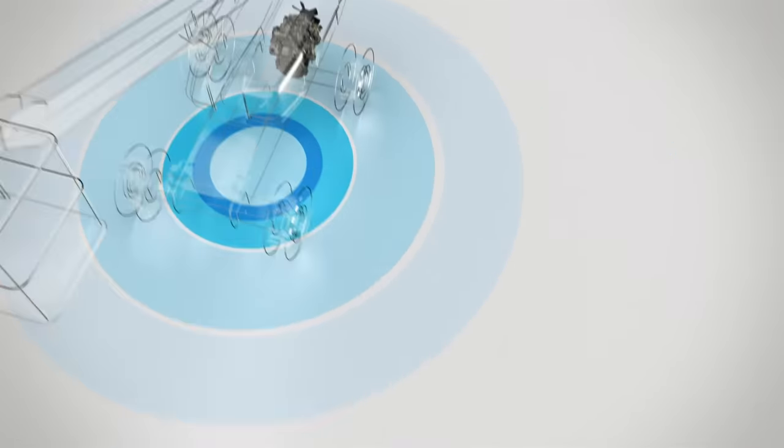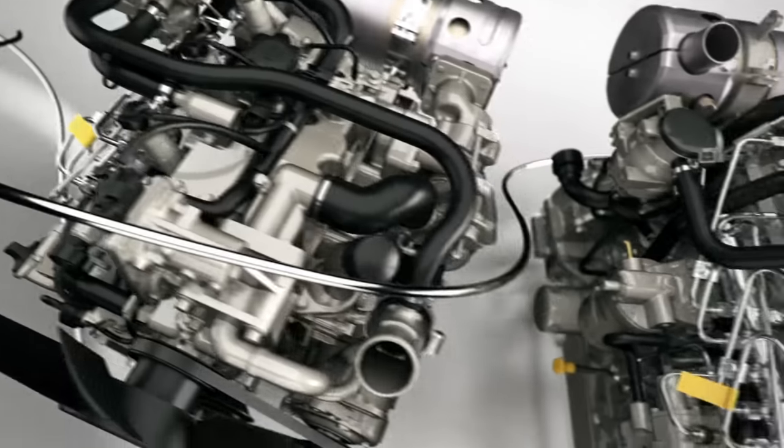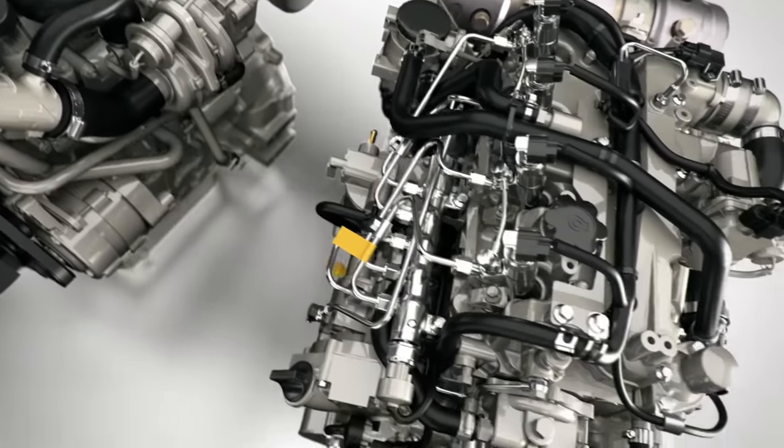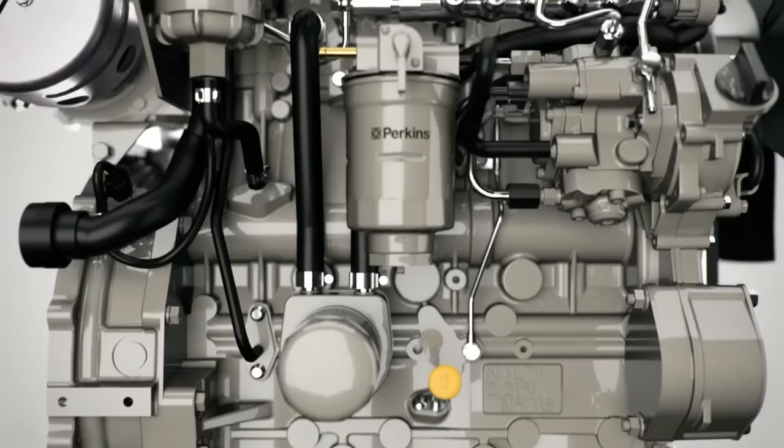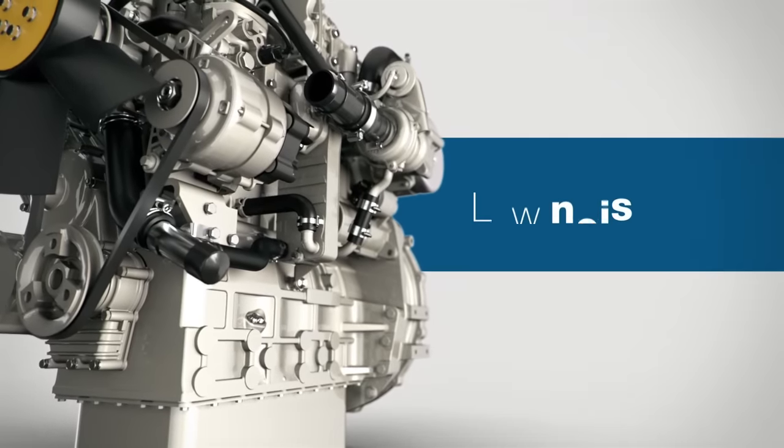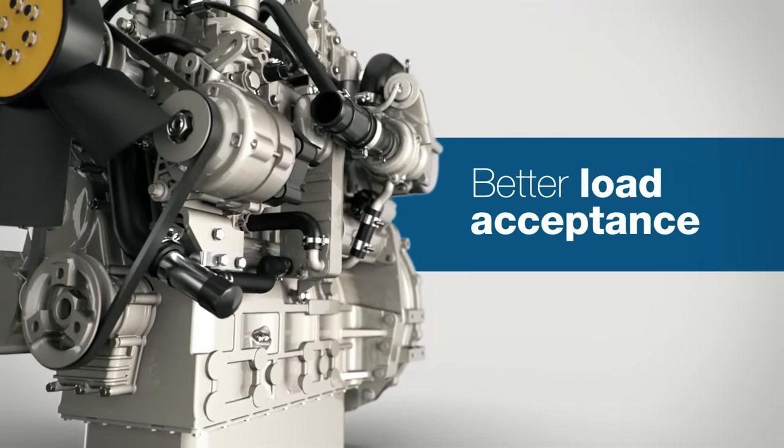The Perkins Syncro 1.7 and 2.2 are built on field proven common core product and advanced technologies used in many large industrial engines to provide class-leading torque, low noise characteristics, better load acceptance, and low fuel consumption that greatly reduces operating costs.